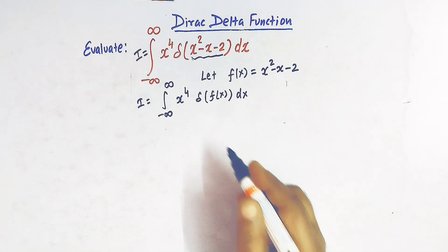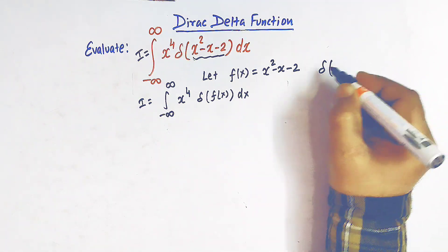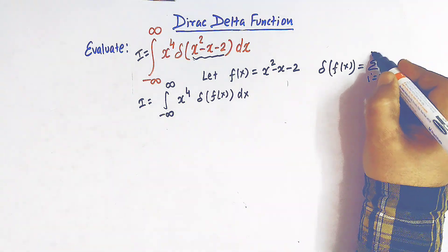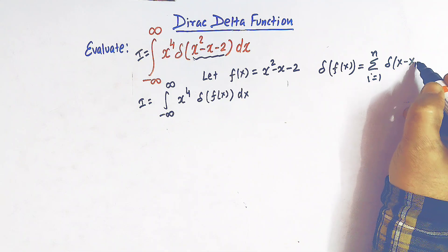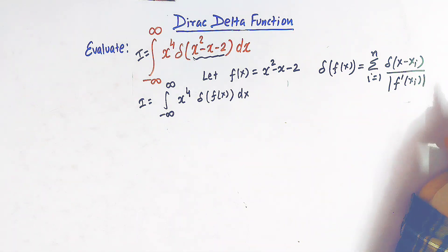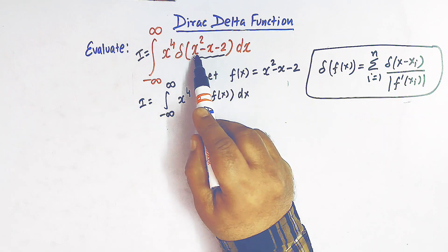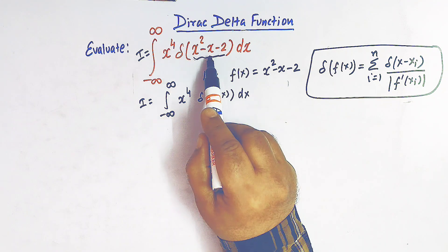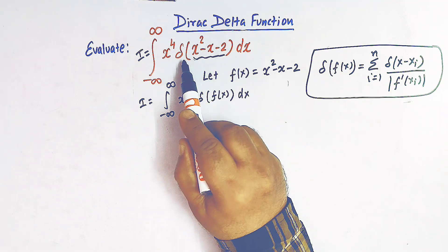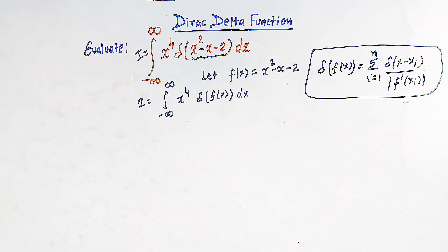Here we will make use of one important property of the Dirac delta function. The property states: delta of f(x) is equal to the summation from i equals 1 to n of delta of (x minus x_i) divided by the absolute value of f prime of x_i. This property is used when we have a function inside the Dirac delta notation other than a linear factor.